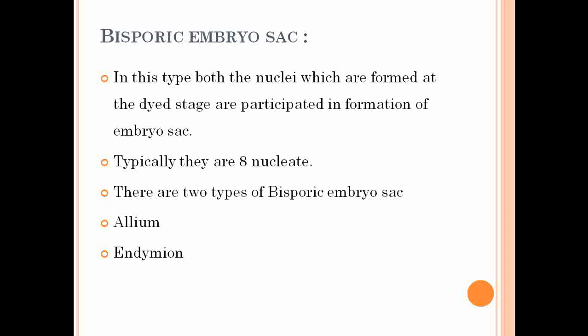The bisporic embryo sac produces 8-nucleated embryo sacs. There are two types: the Allium type and the Endymion type. Let's see one by one the development of the Allium and Endymion types of embryo sac.